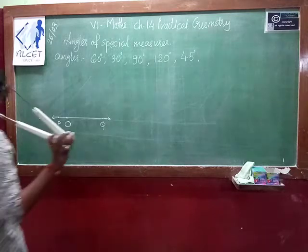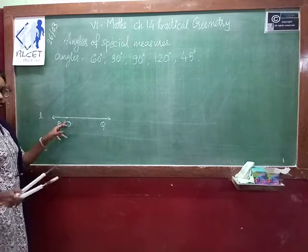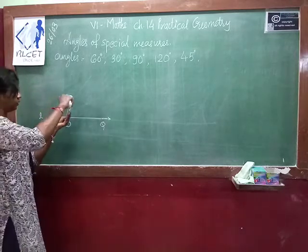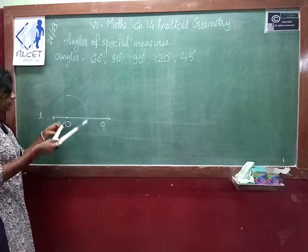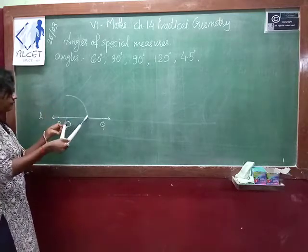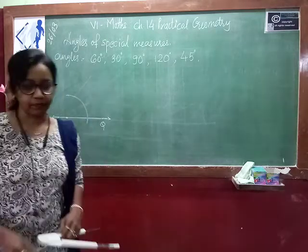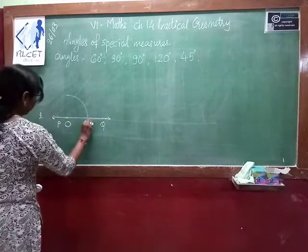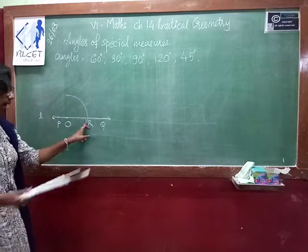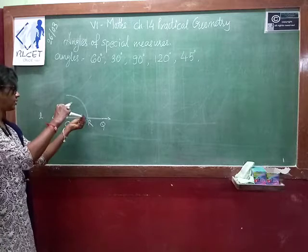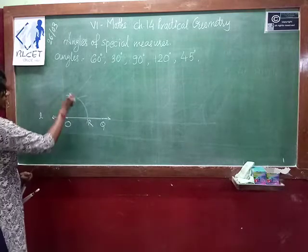Now use your compasses and draw an arc from the point O. You are getting one intersecting point here. We cut this line PQ at R — you can write R here. Now without changing this measurement, keep your pointer on R and draw an arc which cuts the previous arc. Name it as S.